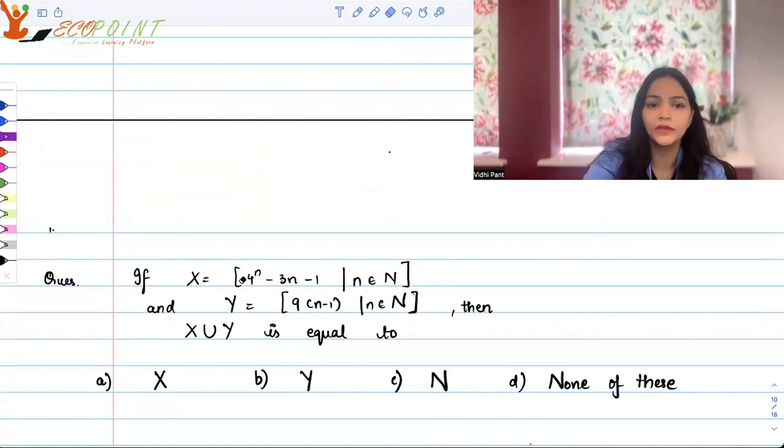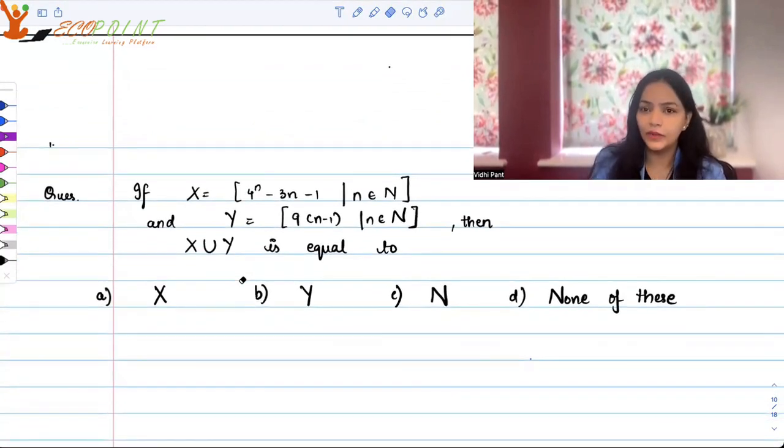It's a question from set theory, so we have two sets here. Let X be the set of values generated by 4^n - 3n - 1 where n is a natural number, and Y is the set of values generated by 9(n-1) where n is a natural number. These are the two sets and you need to tell what is X union Y.